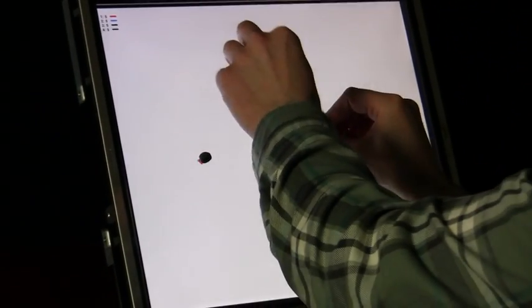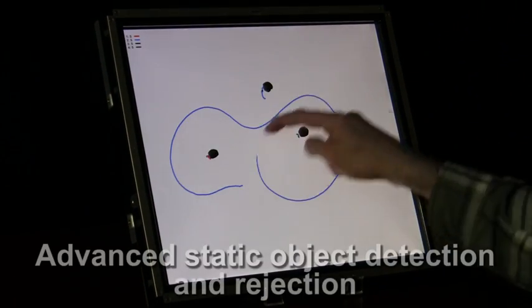We avoid bubblegum failures by identifying and ignoring debris on the screen through advanced static object detection and rejection.